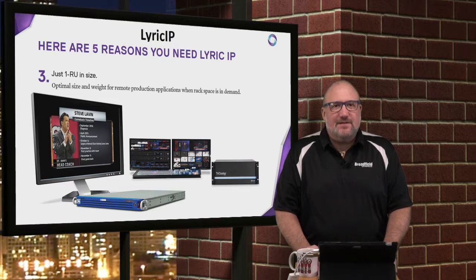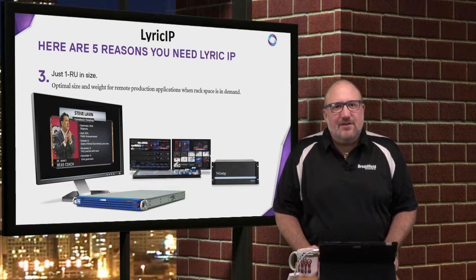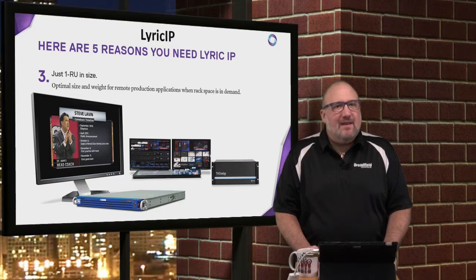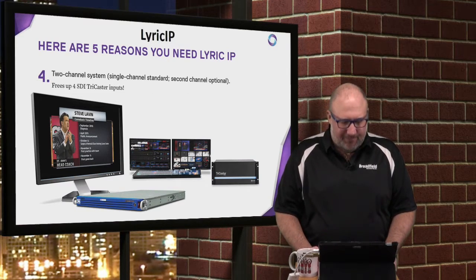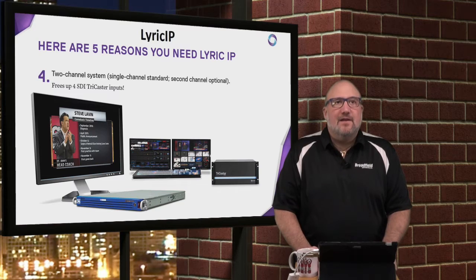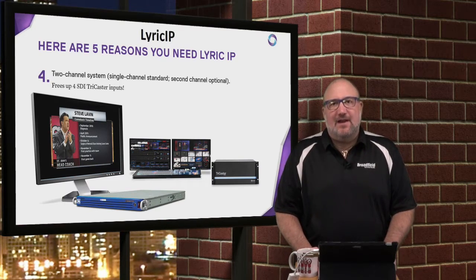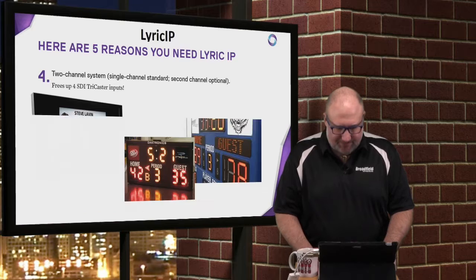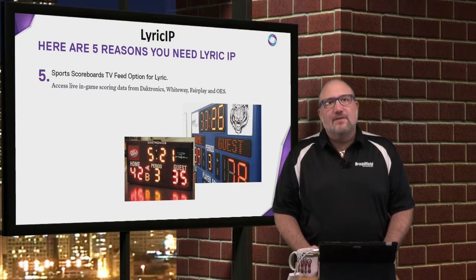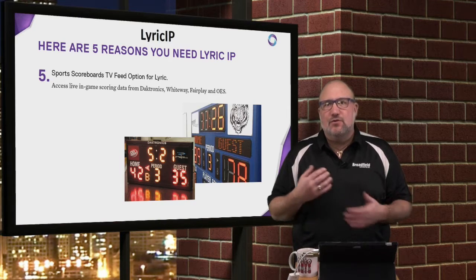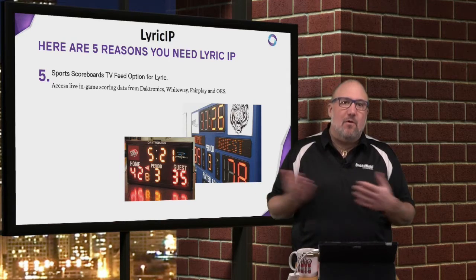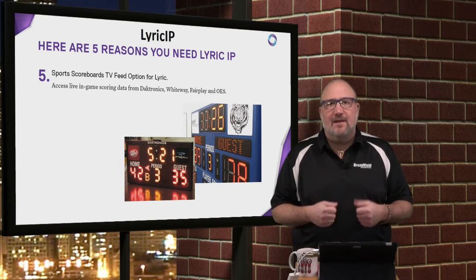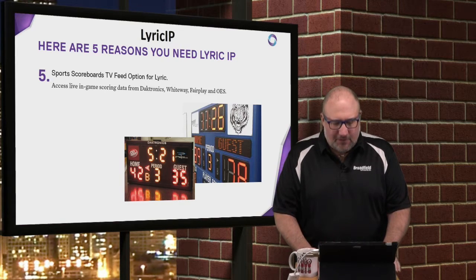Number three: it's a 1RU size that mounts right in a rack. If you've got a TriCaster 460 or a TriCaster 8000 installation, you can add this unit right into the rack — easy install, ready to go. It comes with one channel, but you can add a second channel if you need multiple layers of graphics. Number four: it can tie into various scoreboards for automation, automatically feeding in your scores.